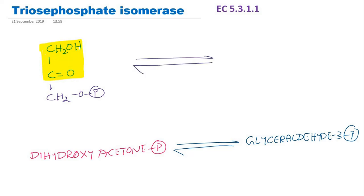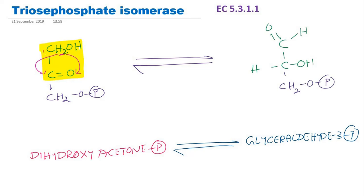From the CH₂OH group, two hydrogens move to the second carbon atom — one hydrogen comes here, another hydrogen comes here. The structure will now look like this: carbon number 1, carbon number 2, carbon number 3. There is a rearrangement: the two hydrogens go to the second carbon atom, which becomes CHOH. The first carbon atom, CH₂OH, becomes an aldehyde group. That is why the product is called glyceraldehyde 3-phosphate, catalyzed by triose phosphate isomerase. This concludes the discussion on class 5 enzymes — isomerases. Thanks for watching.